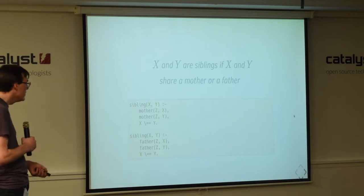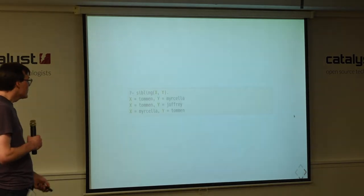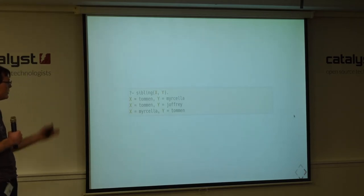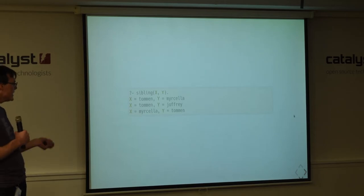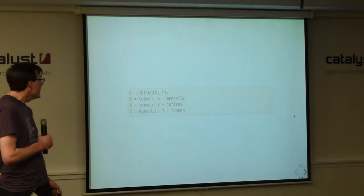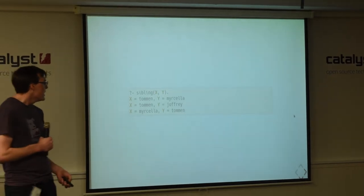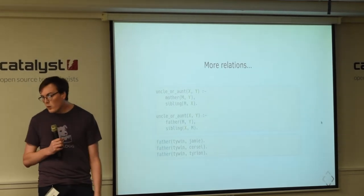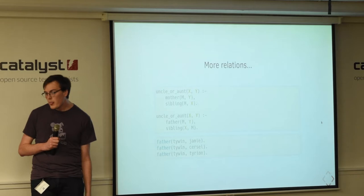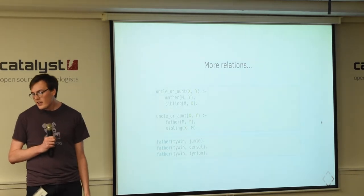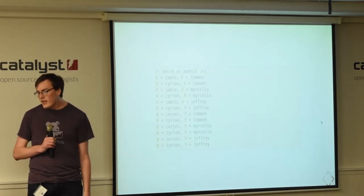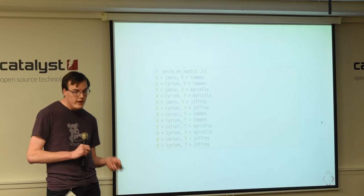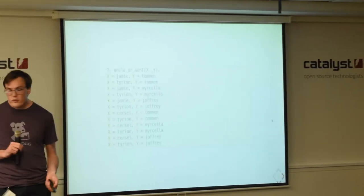Now, we also need to do the same for father. And then we can start querying this for who are siblings. And so, again, what we're asking the prologue for is for which values of x and which values of y satisfy the sibling relationship. So, we can do more relations, aunt or uncle, and we start to get a lot of power out of it. With very simple definitions and a few number of facts, we can start to get a lot of information out of these rules.